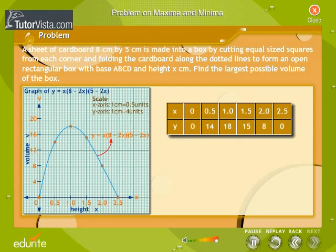The problem can be picturized with a graph. Observe the graph carefully. From the graph, we find that the maximum possible volume of the box is equal to 18 cubic centimeters.